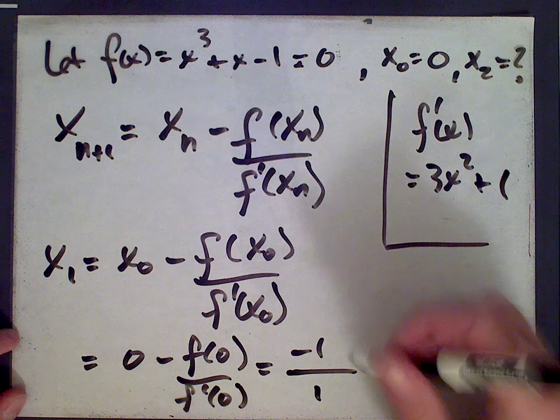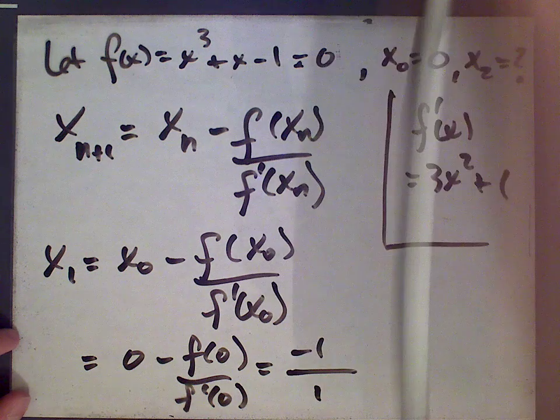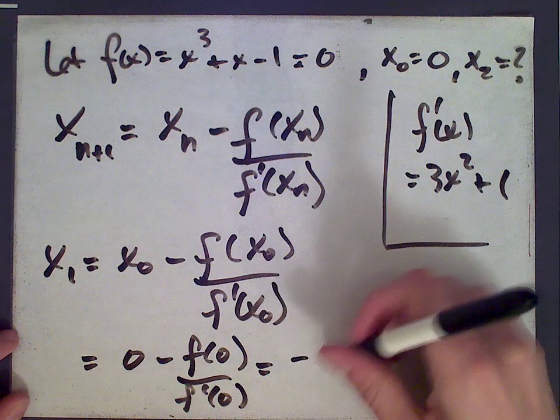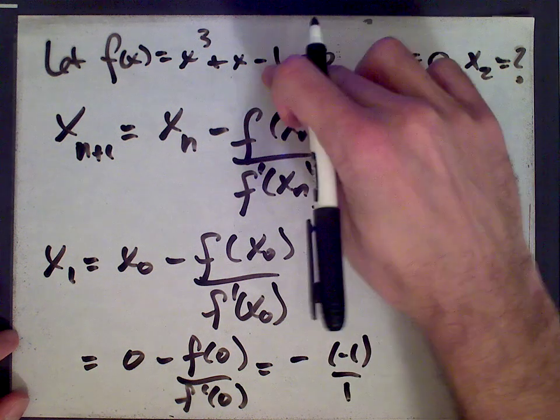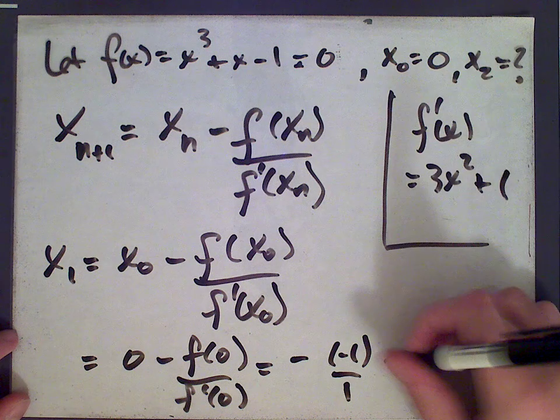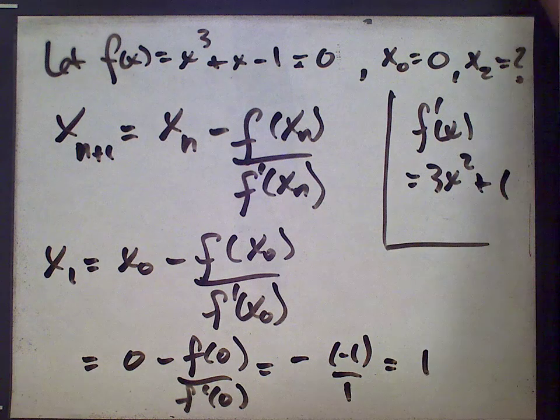So there's an extra minus sign in here. It's zero minus negative one over one. Negative one from here, one from here after plugging in zero. So x one is one.